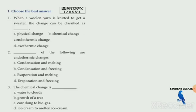Choose the best answer. First question: when woolen yarn is knitted to get a sweater, the change can be classified as a physical change. That means the woolen yarn becoming a sweater is a physical change.